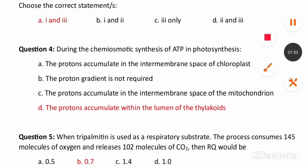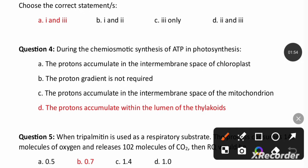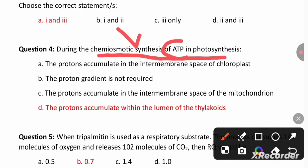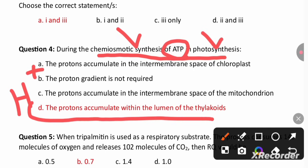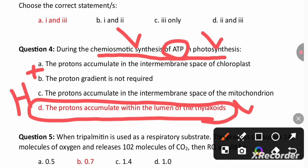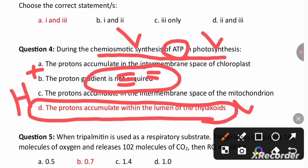During chemo-osmotic synthesis of ATP in photosynthesis, the chemo-osmotic process is for ATP synthesis in the chloroplast. During this process, protons (H+) accumulate within the lumen of the thylakoid. Thylakoids are present in the chloroplast, and accumulation of H+ ions occurs in the thylakoid lumen.